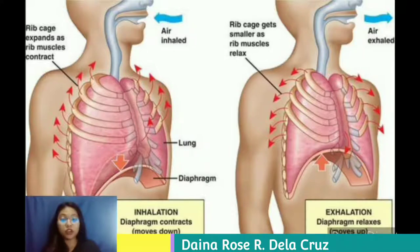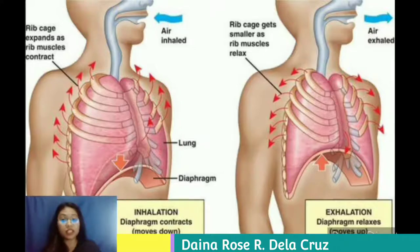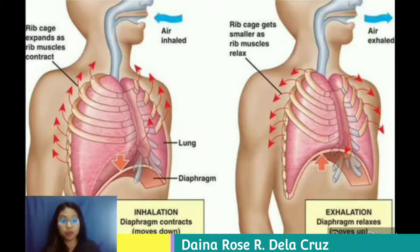Expiration, or exhalation, is the process of letting air out of the lungs during the breathing cycle. During expiration, the relaxation of the diaphragm and elastic recoil of the tissue decrease thoracic volume and increase the intra-alveolar pressure. Expiration pushes air out of the lungs.